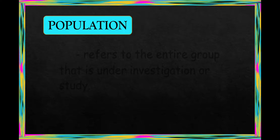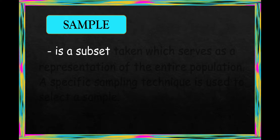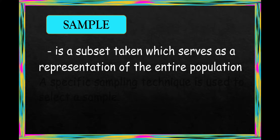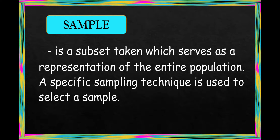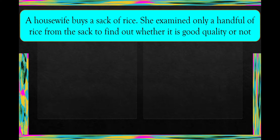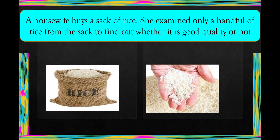First, we're going to discuss population and sample. Population refers to the entire group that is under investigation or study, while sample is a subset taken as a representation of the entire population. A specific sampling technique is used to select a sample. For example, a housewife buys a sack of rice and examines only a handful of rice from the sack to find out whether it is good quality or not.